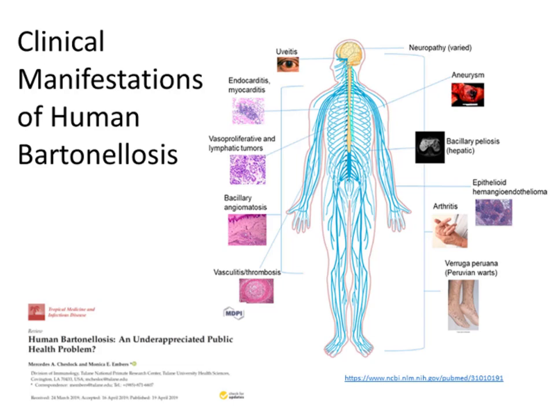In 2019, we published a review of the clinical manifestations of human Bartonellosis, calling it an underappreciated public health problem. Not only are uveitis and bacillary peliosis associated with Bartonellosis, but also varied neuropathies, aneurysms, vasoproliferative and lymphatic tumors, vasculitis and thrombosis, hemangioendothelioma, and even arthritis. Importantly, there aren't just three species of Bartonella associated with human disease — currently we know of at least 20 different species, 16 of which have been isolated from diseased humans.